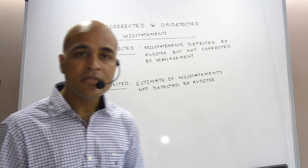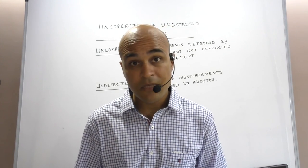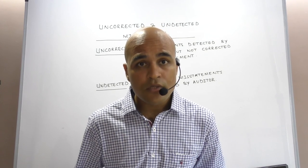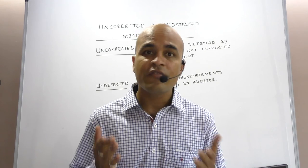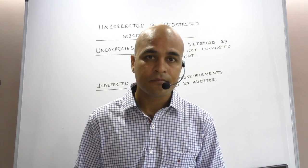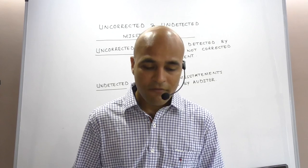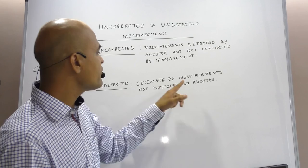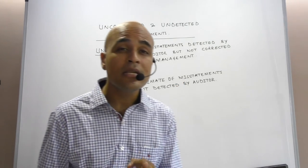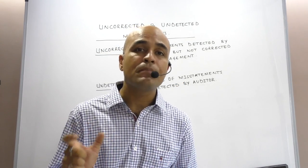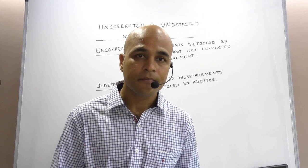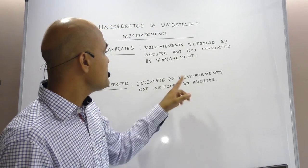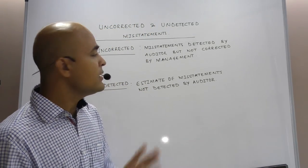Similarly, there are some undetected misstatements. You may ask why there are some undetected misstatements — because it is not possible in case of all companies to verify 100% of the transactions. In such cases, when I am not verifying 100% of transactions, I will make an estimate of misstatements which are not detected by the auditor, based on my sample which I have checked. I am estimating undetected errors.